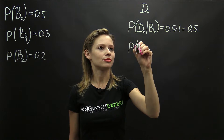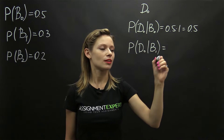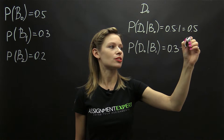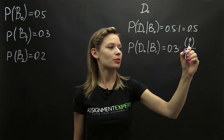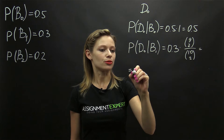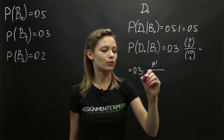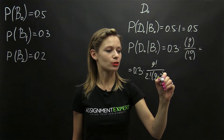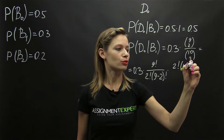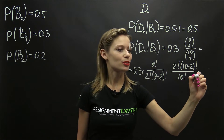The probability of D0 given the batch with one defective component is equal to 0.3 times C(9,2) over C(10,2), which equals 0.3 times 9! / (2! × 7!) divided by 10! / (2! × 8!), and that is equal to 0.24.